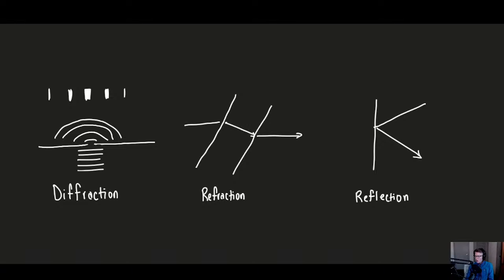We're going to look first at the different properties, and then once we get some of these different properties down, what we'll look at is predominantly lenses and mirrors. We're going to be zooming in and focusing on the idea of refraction and reflection, because refraction and reflection are really the properties that underlie lenses and mirrors. We're going to talk about how they're similar, how they're different, and look at some of the applications and problems — how you would use this stuff rather than just focusing on what it is.